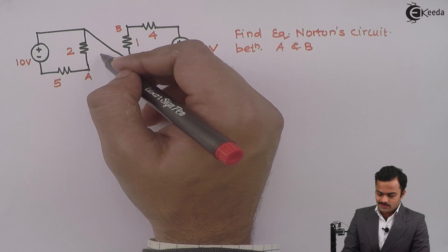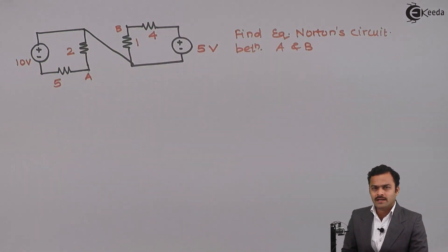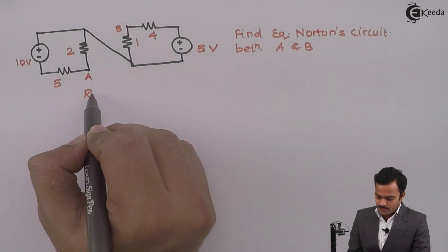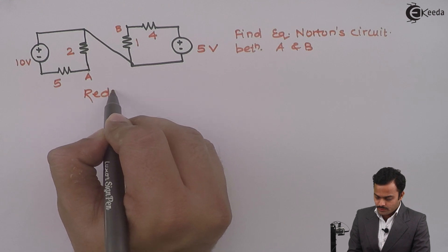So what I will do is redraw the circuit keeping all the concepts as it is. My first step before applying Norton's theorem is redrawing the circuit.